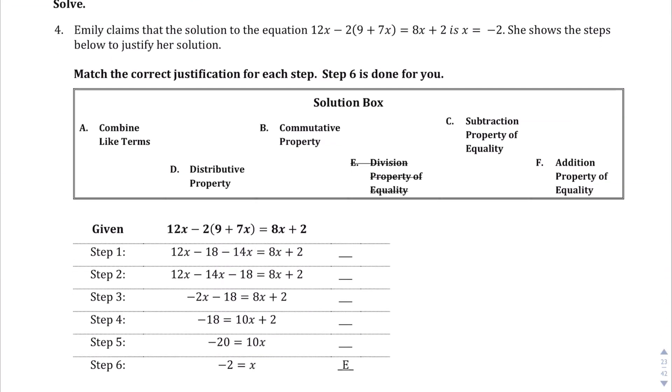Question number 4. We're told that Emily claims that the solution to the equation 12x minus 2 times 9 plus 7x equals 8x plus 2 is x equals negative 2. She shows her steps to justify her solution. Match the correct justification for each step. Step 6 is done for you. That one is done for us.